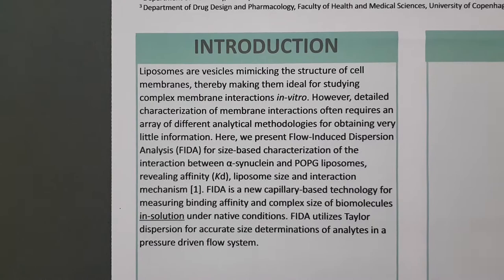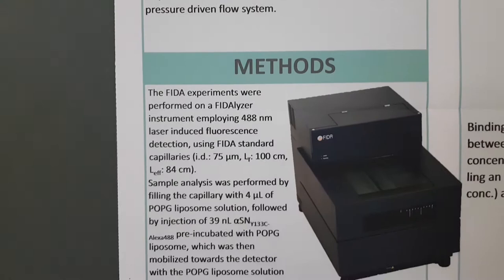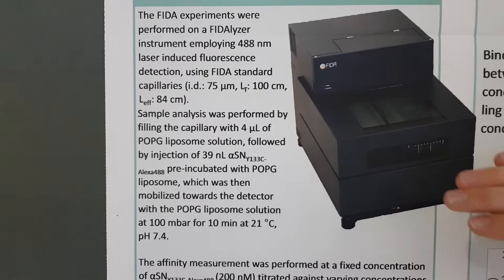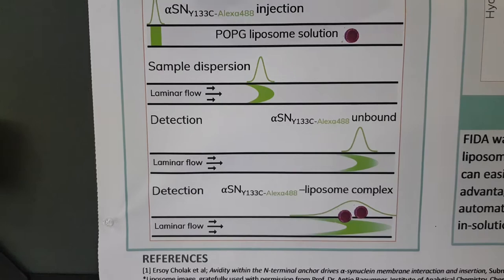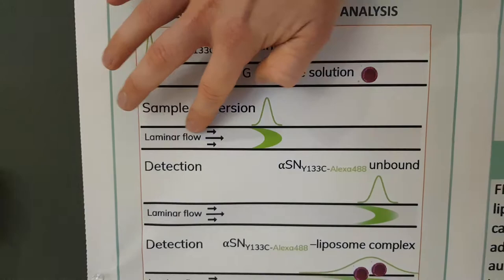For analyzing the experiments we have used a Fetalizer 1 instrument employing fluorescence detection. What we have done is label alpha-synuclein with a fluorophore — this is our ligand selectively interacting with the liposome. The principle is that we inject a narrow zone of our indicator, the alpha-synuclein, and mobilize it with the flow towards a detection point.